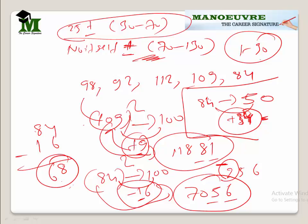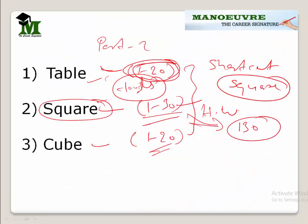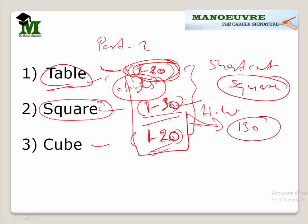So to recap: table is something you have to memorize from 1 to 20, squares from 1 to 30, and cubes from 1 to 20. Without fail you should do this homework. You will master the value whenever you come across square and cube based questions.